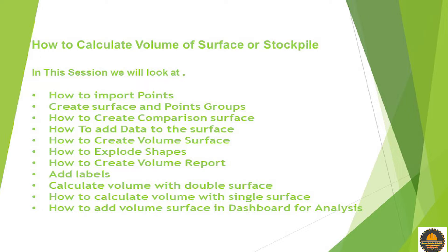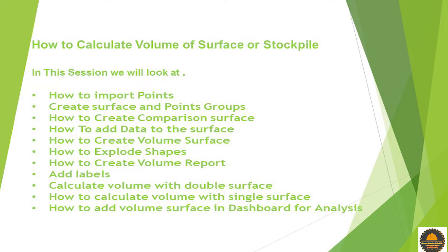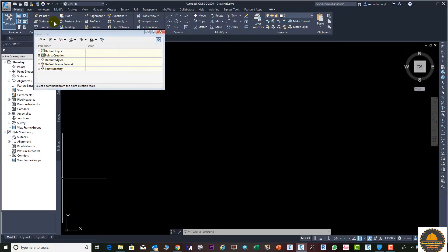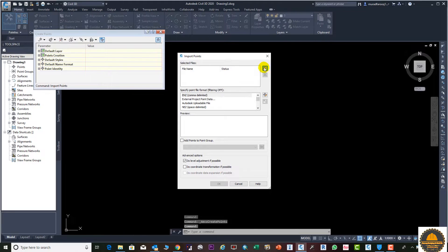In this video we will do two methods. First of all we will calculate volume by adding two surfaces, and in the second part of this video we will do the same process by using one surface. You can use the first process for more accurate jobs. If you have any questions please leave a comment in the comments box and I will try to respond in time.